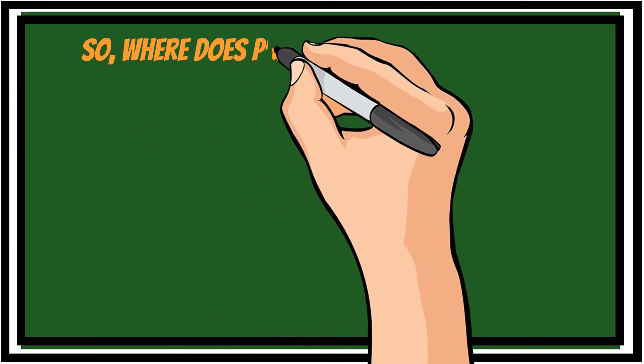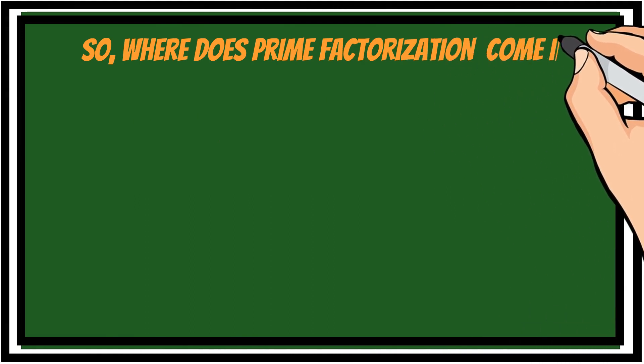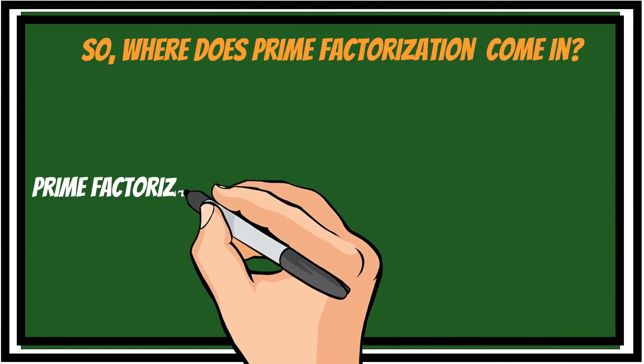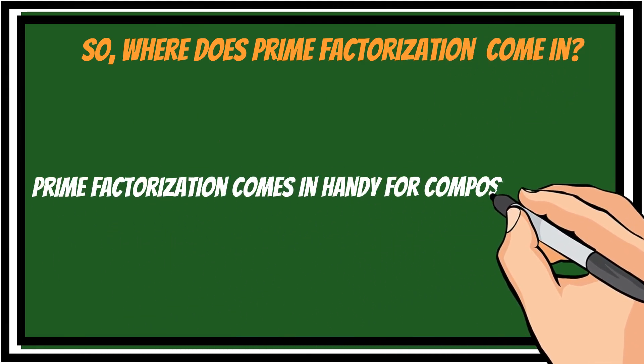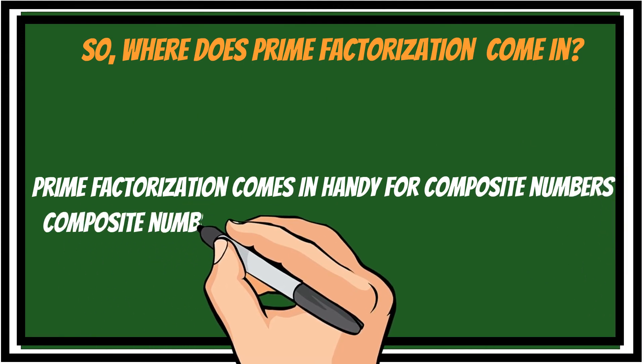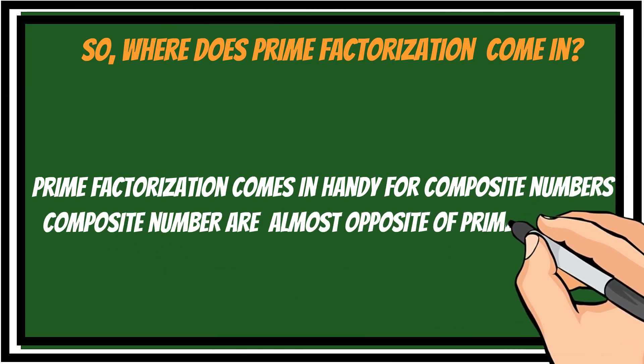So where does prime factorization come in? Prime factorization comes in handy for composite numbers. Composite numbers are almost opposite of prime numbers, and there are numbers with more than two factors.